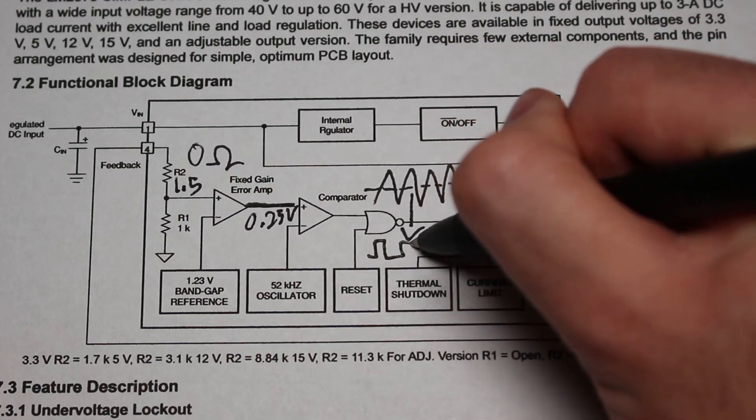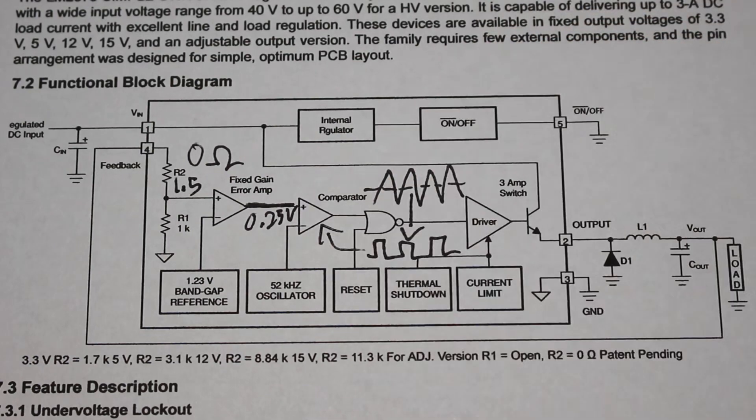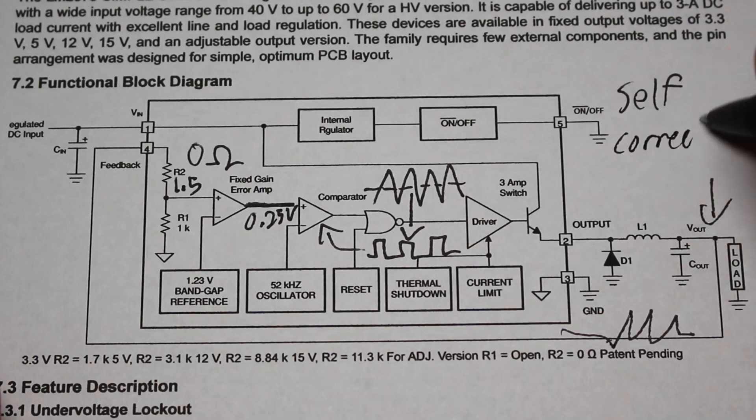The output of the comparator is then given to the switch as we described earlier. This feedback circuit allows the IC to basically correct itself when the voltage is too high or too low.